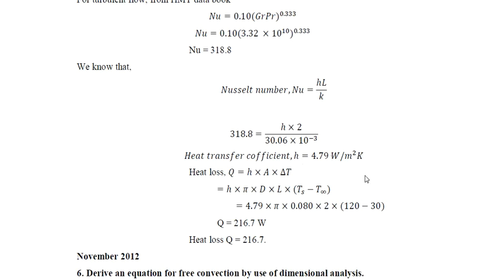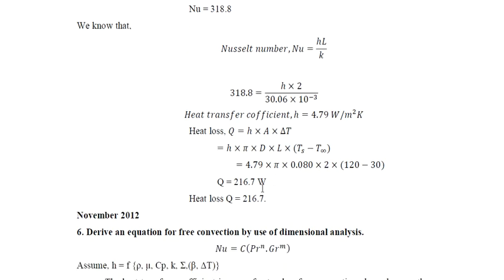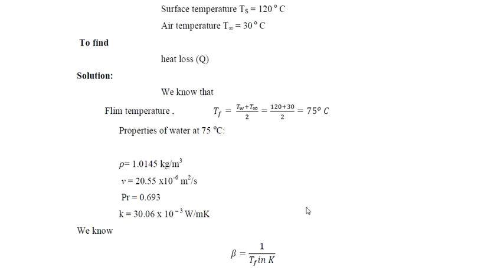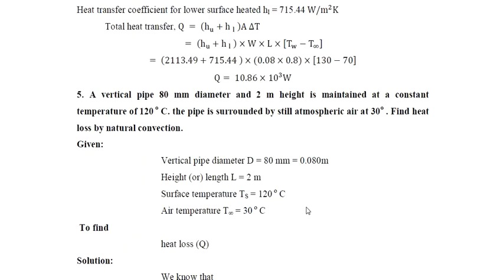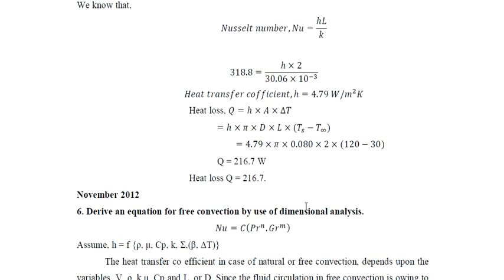The heat loss q = h × A × ΔT = h × π·D·L × (T_s − T_∞) = 4.79 × π × 0.08 × 2 × (120 − 30) = 216.7 W. The heat loss by natural convection from the vertical pipe is 216.7 W. More numericals will be solved in the next session.